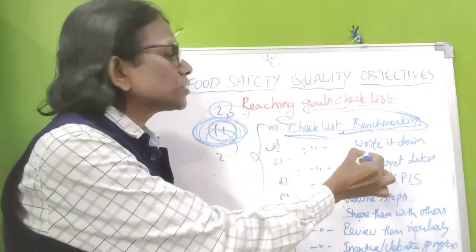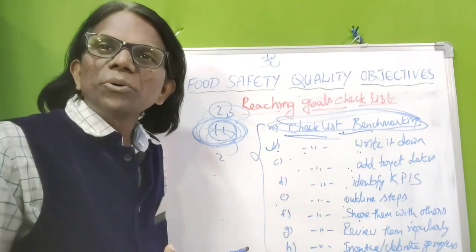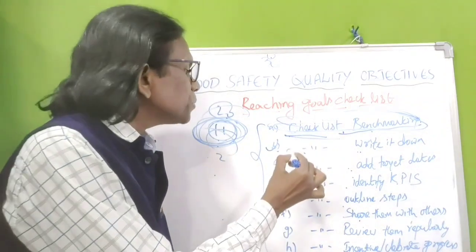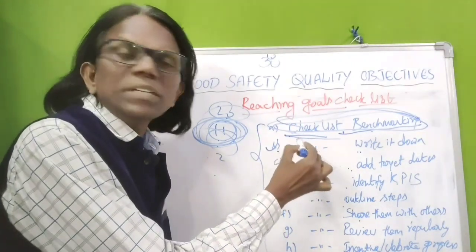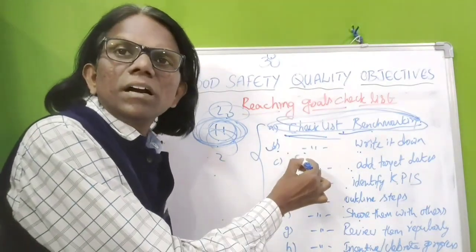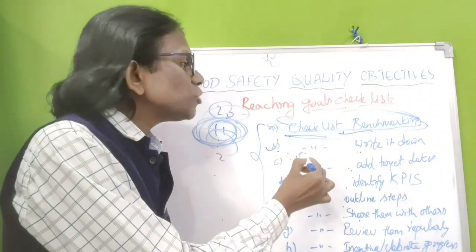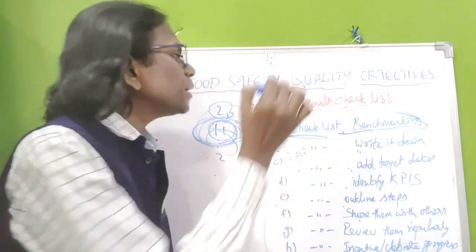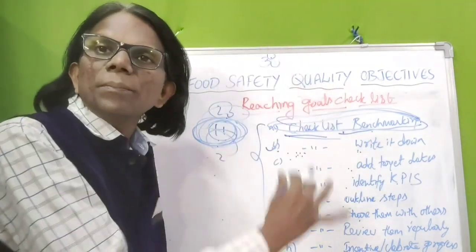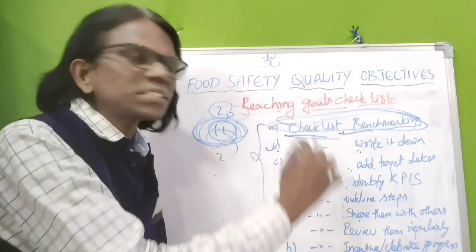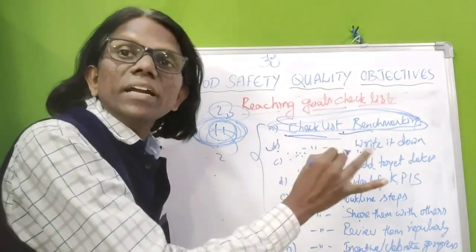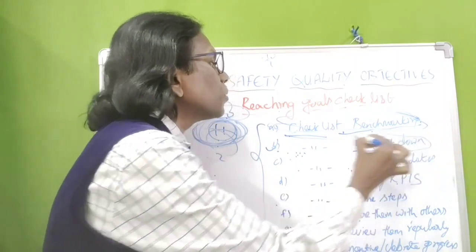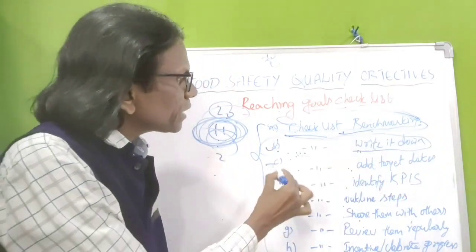The second checklist item is to write it down — a goal is not a goal unless you write it down. You have to prepare a plan with clear measures of success that is achievable, measurable, attainable, relevant, and time bound. Prepare an action plan with methods of success; otherwise you cannot achieve the goal.